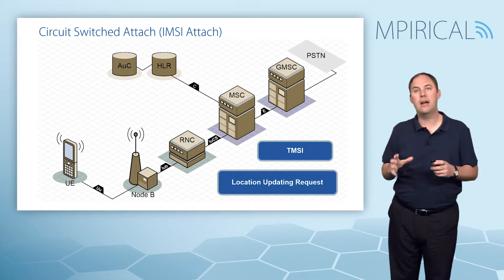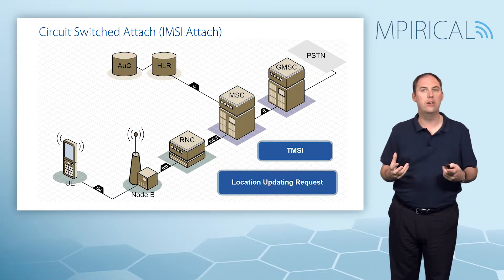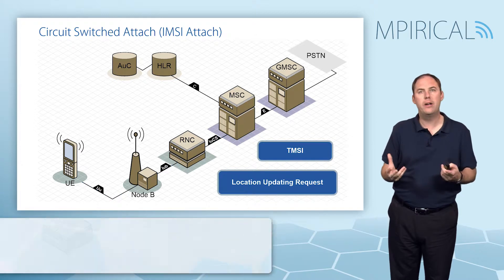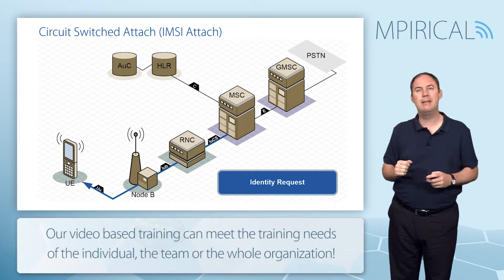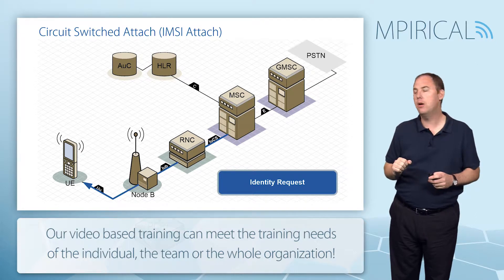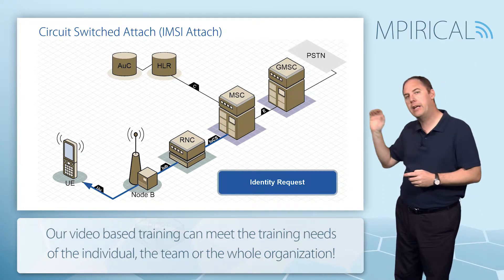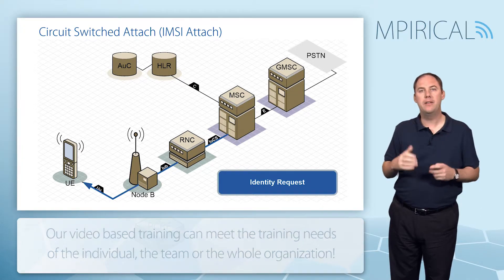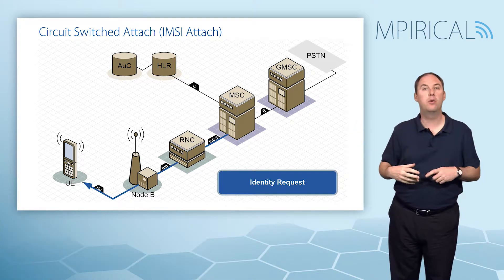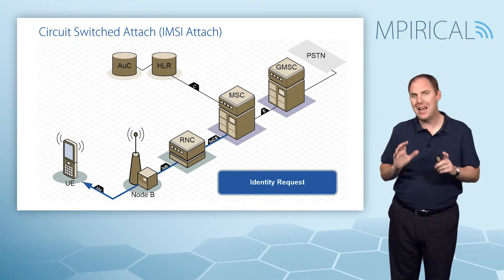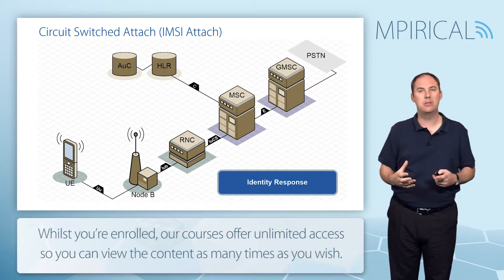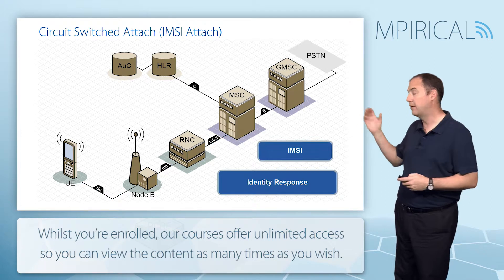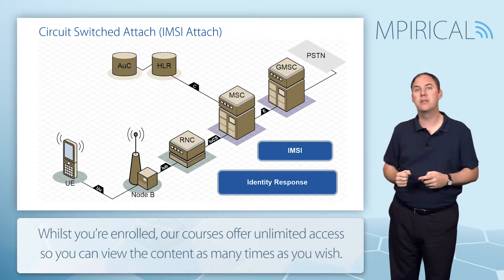The MSC will look at that combination of TMSI and old location and ask: do I know you? If it doesn't recognize the subscriber, it will go back to the mobile and issue an identity request, saying it doesn't understand who you are. In this case, the identity request is asking for the IMSI. This doesn't have to happen, but I'm showing it as an example. Coming back, we get an identity response, and I'd expect to find the IMSI inside that message.